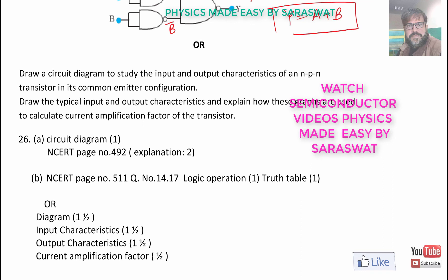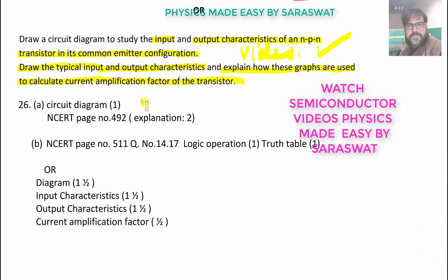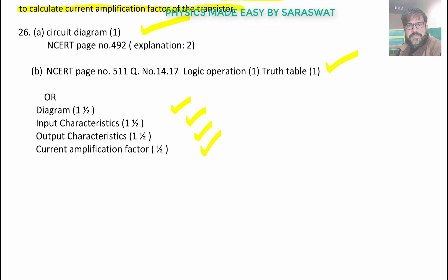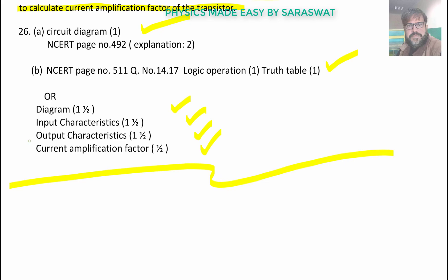In OR part, draw a circuit diagram to study the input and output characteristic of NPN transistor in its common emitter configuration. This has been done in the video. In semiconductor electronics, draw the typical input and output characteristics, both the curves and explain how these graphs are used to calculate current amplification factor, which are there in the NCERT and in our videos also. The diagram input characteristics, output and the current amplification factor.